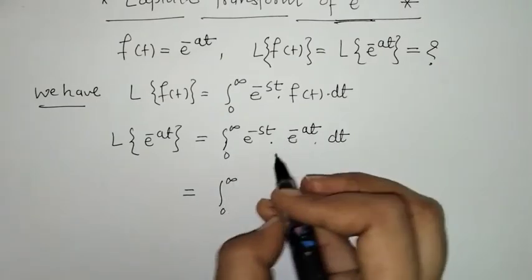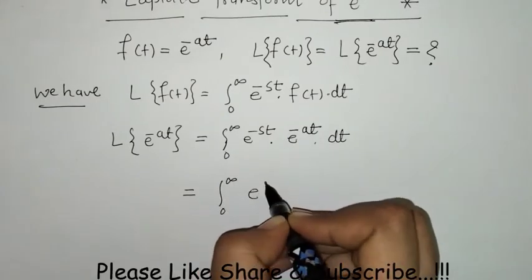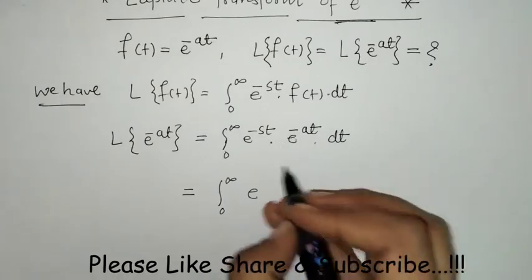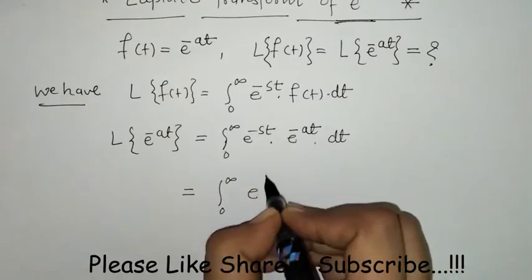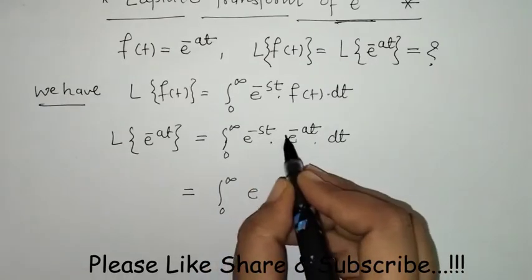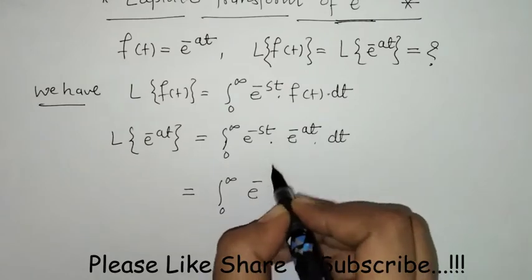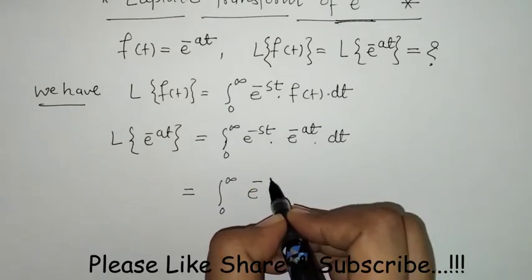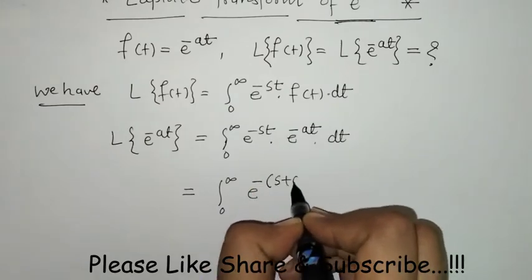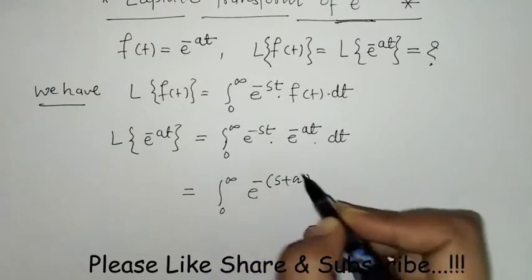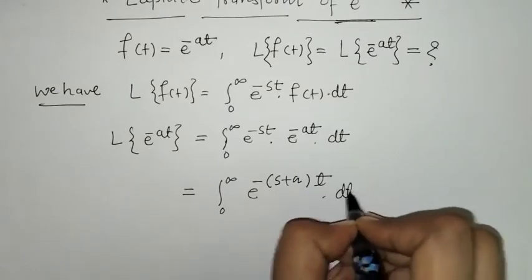We will do the simplification. By the laws of indices, we can take t as common and write the exponents combined.